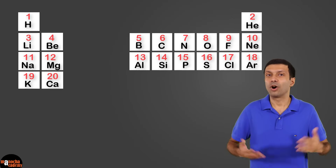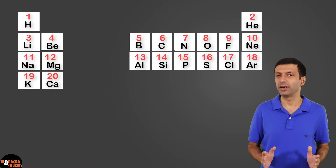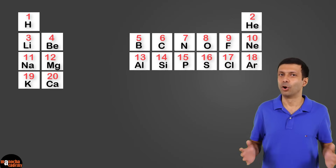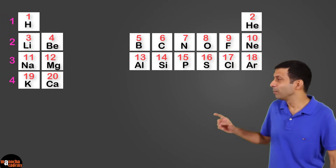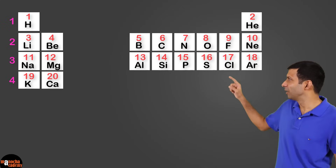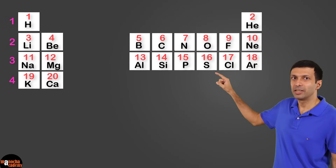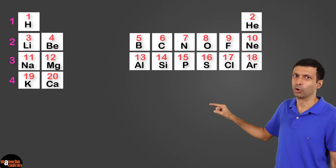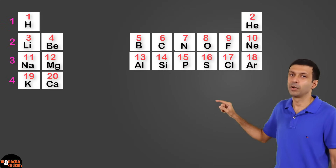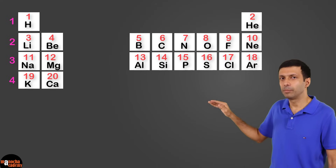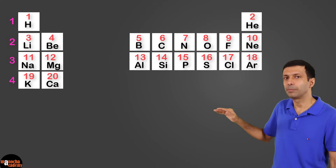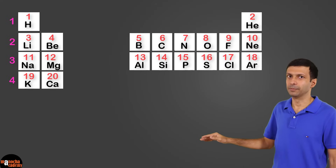Now let's talk about the significance of the period or the row. In our mini periodic table, we have periods from 1 to 4. But remember, in the full periodic table, you have it up till 7.